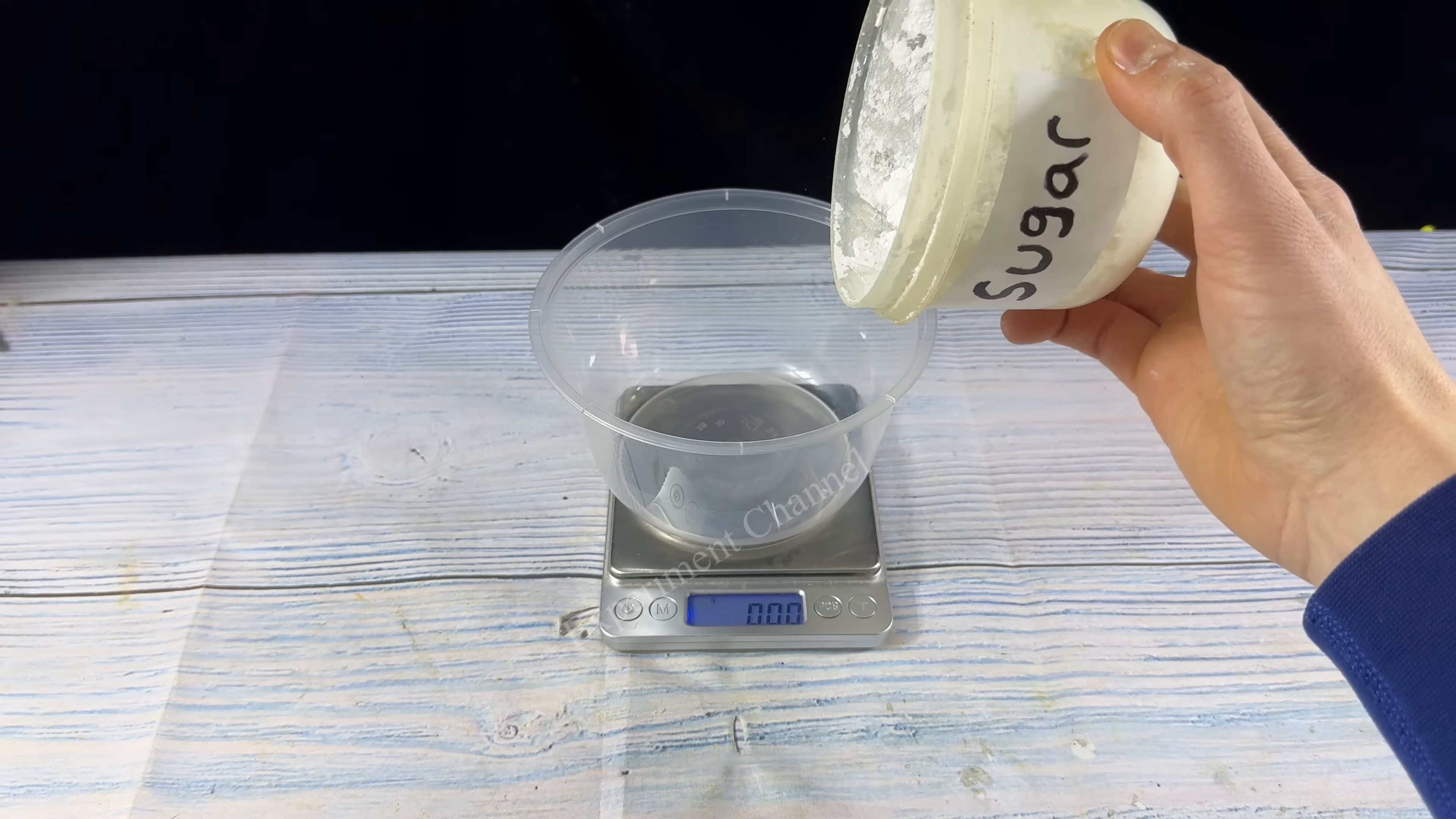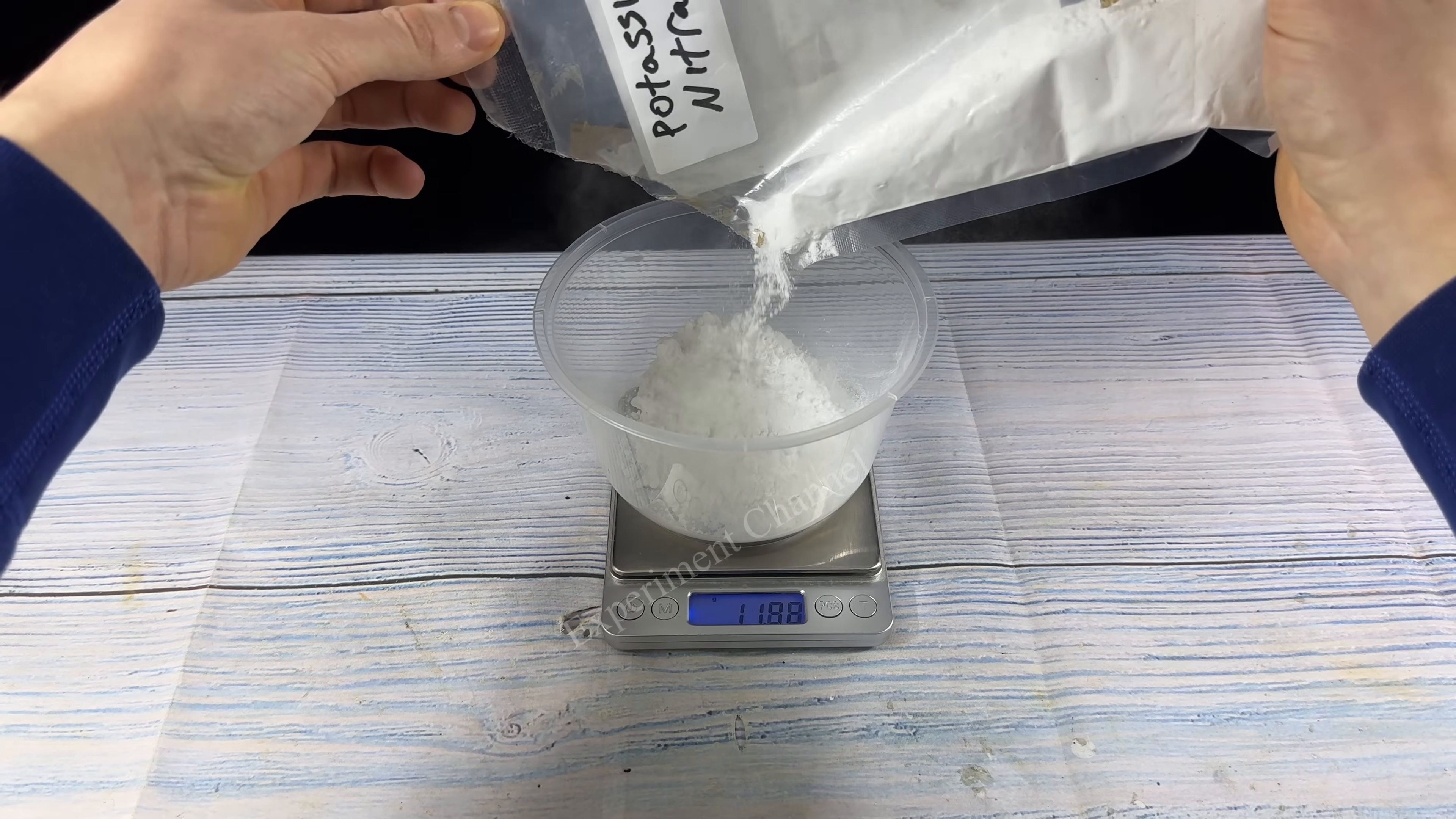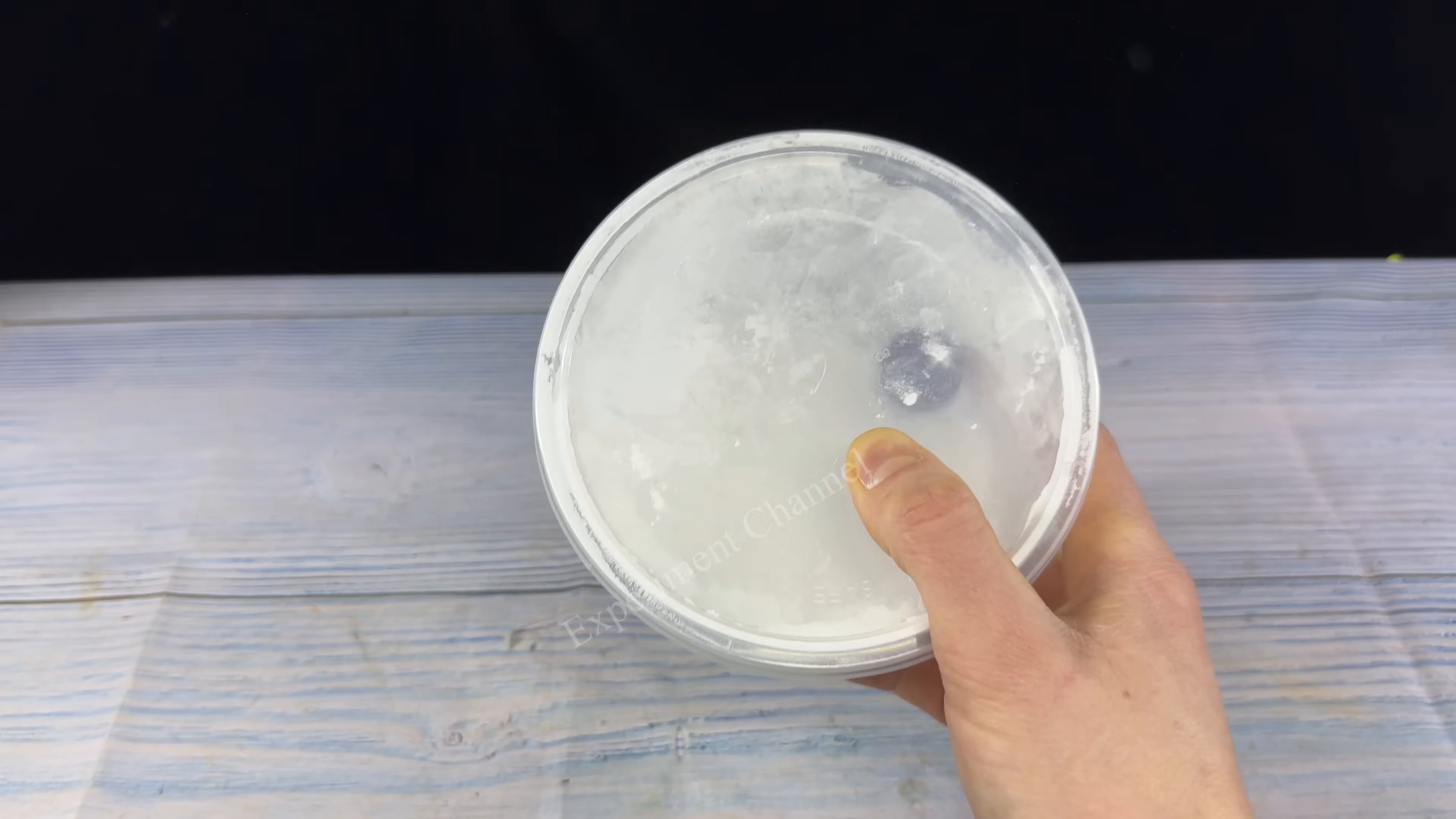Then we're going to make some white mix which is 35 grams of sugar and 65 grams of potassium nitrate. I pre-blended my nitrate to a fine powder using a blender. Now we're going to take our marble. This will help remove all the clumps so we have an even mixture.